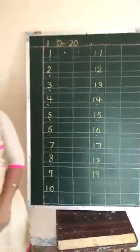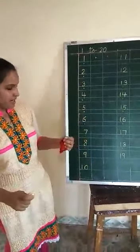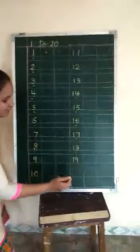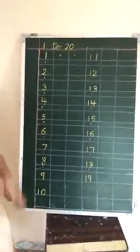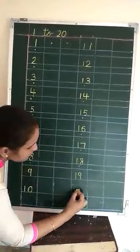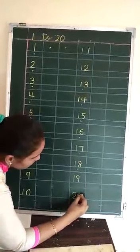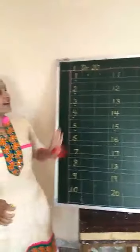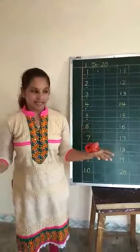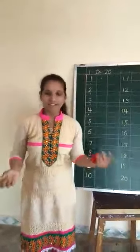Listen. After 19, which number comes? 20. So how to write 20? We have to write it in the next box — no, we don't leave a box. Directly after 19, write 20. Okay, children, whenever you are writing 1 to 20, you have to loudly speak and write so you can recognize the numbers properly. Thank you, and have a nice day. See you!